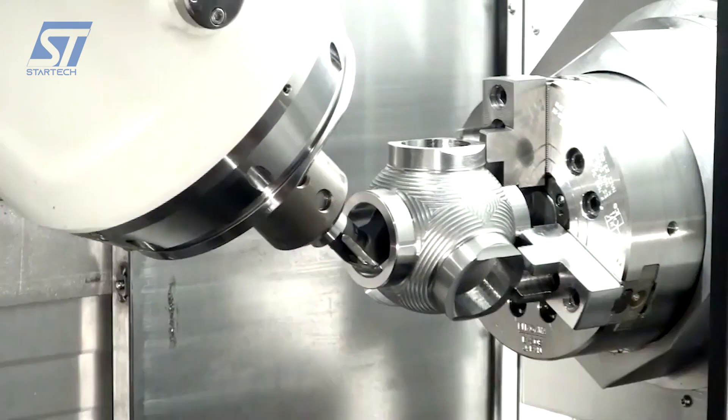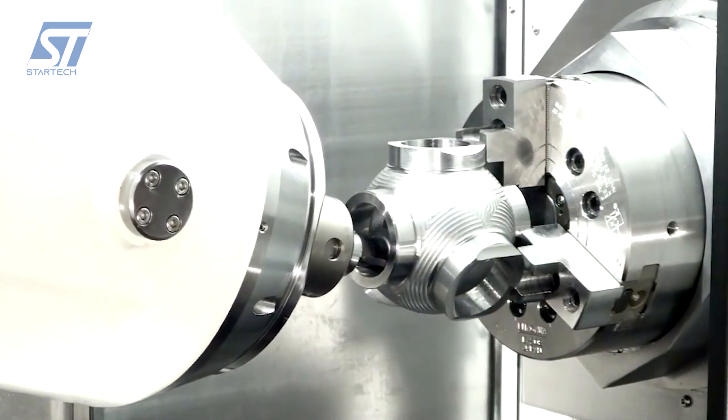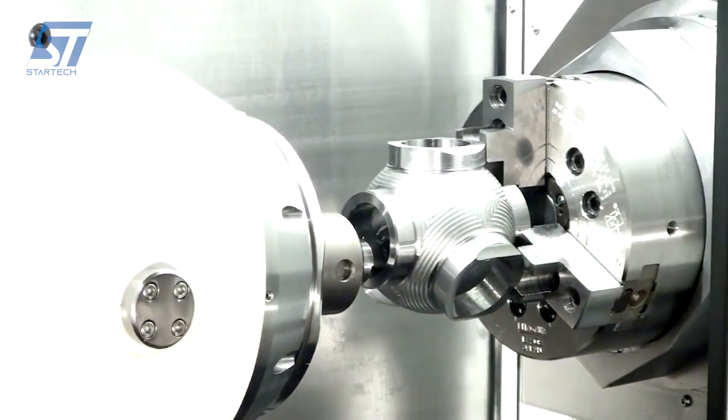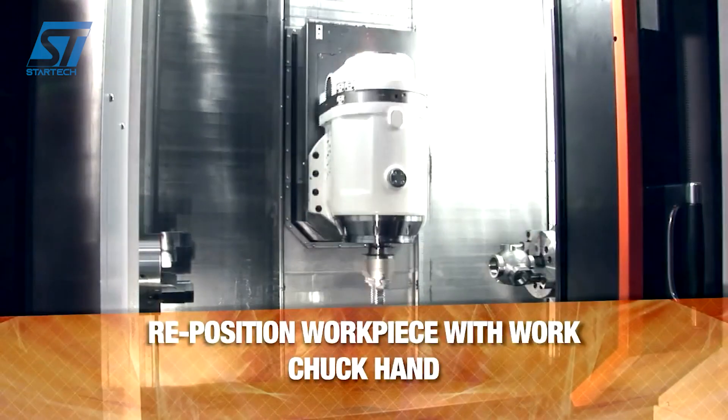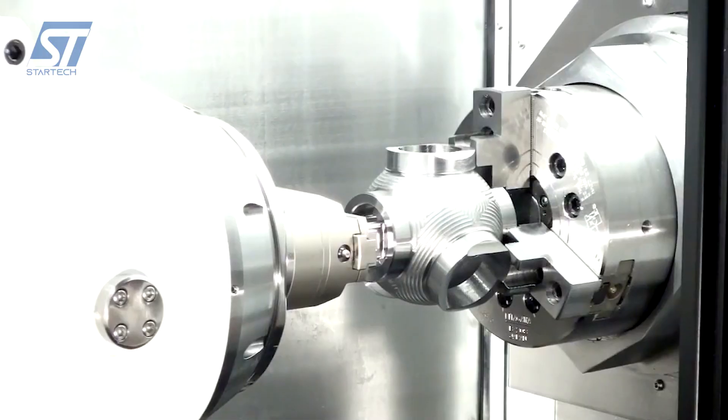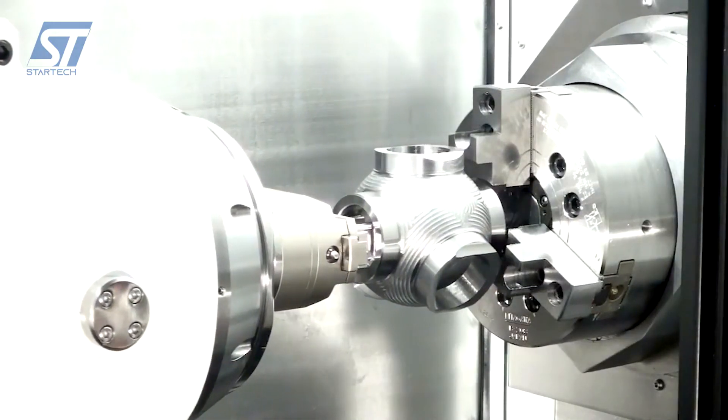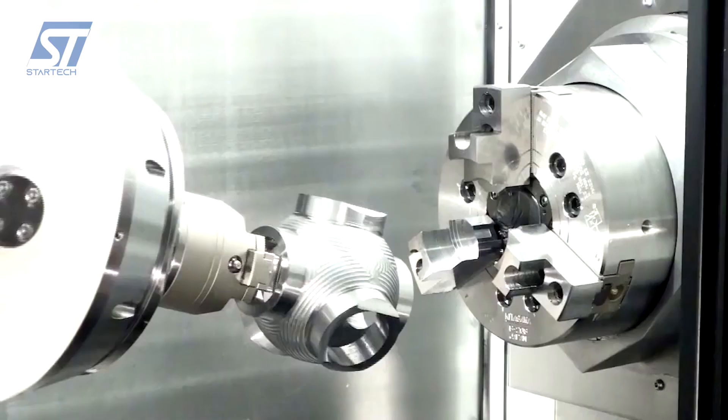If the part requires machining on both sides, the main spindle transfers the workpiece to the second spindle. The second spindle holds the workpiece while the milling spindle and/or tools on the turret perform operations on the opposite face. Once all machining operations are complete, the finished part is unloaded from the machine.